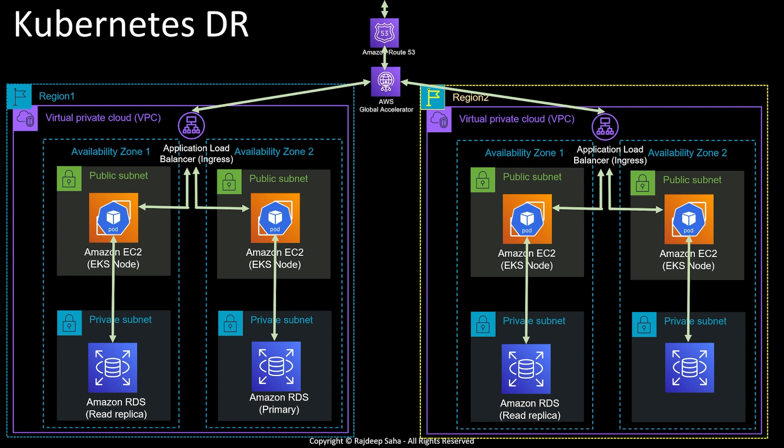When you configure AWS Global Accelerator, you can choose the two different load balancers as two different endpoints and select a failover routing policy. You specify 100% traffic for region one and 0% for region two, and only when region one goes down does the full 100% of traffic switch to region two. Global Accelerator gives you an out-of-the-box DNS URL, and you can still use Amazon Route 53 to map a custom domain that points to that Global Accelerator URL. This takes care of the networking side of disaster recovery.